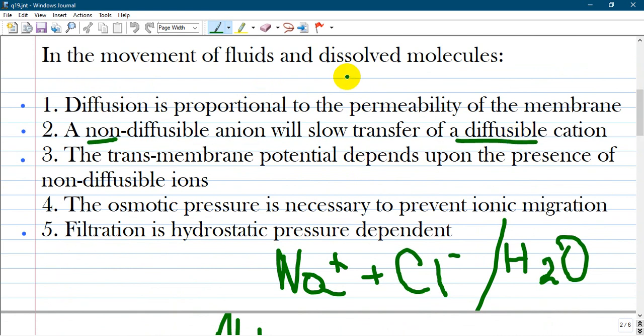In the movement of fluids and dissolved molecules: diffusion is proportional to the permeability of the membrane, a non-diffusible anion will slow transfer of a diffusible cation, the transmembrane potential depends upon the presence of non-diffusible ions, the osmotic pressure is necessary to prevent ionic migration, and filtration is hydrostatic pressure dependent.